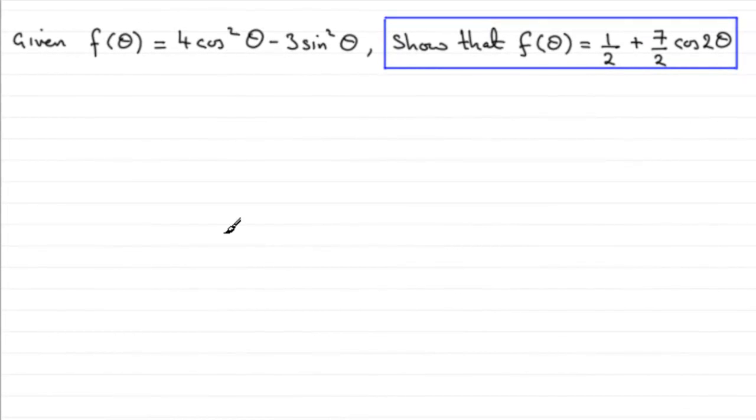Now in this question we're given that f of theta is equal to 4 cos squared theta minus 3 sine squared theta. And we're asked to show that f of theta equals a half plus 7 over 2 cos 2 theta.